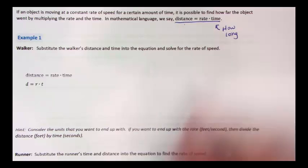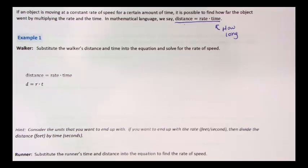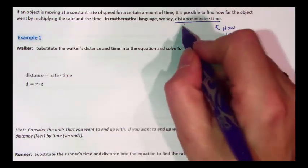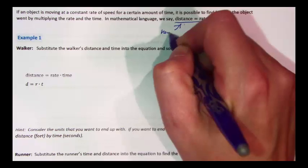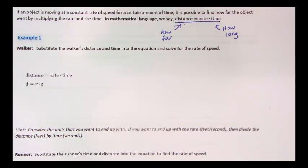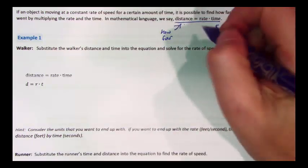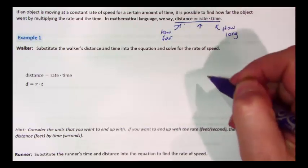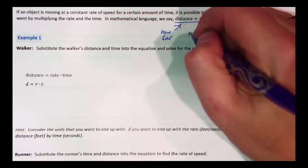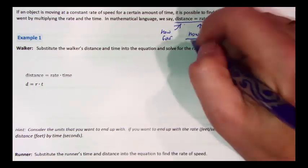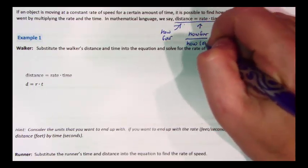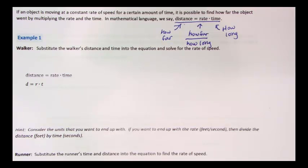Time would be measured in seconds or minutes or hours or even days sometimes. The distance is how far, measured in miles or kilometers or feet or inches, some measurement of length. The third one is the rate, and that is a division of how far divided by how long, whatever our units happen to be.